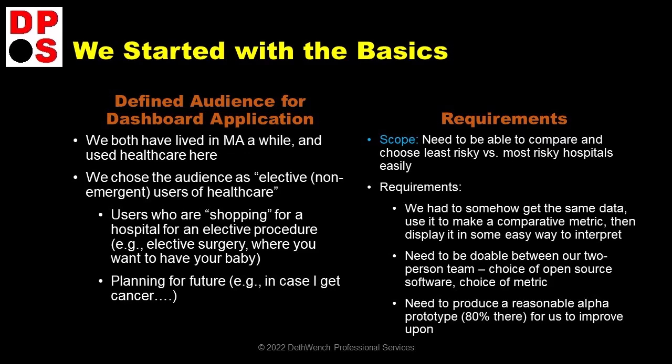Next, on the right side of the slide, we set up the scope and requirements. We agreed that we might not be able to tell which hospitals are objectively safe or risky, but we could tell, relative to each other, which ones were the least risky and which ones were the most risky. We decided that this was the scope — to be able to make those comparisons easily — and we set up a few requirements. Then, after we established these basics, we decided what roles we'd both play on the development team, and we went on to develop our solution.